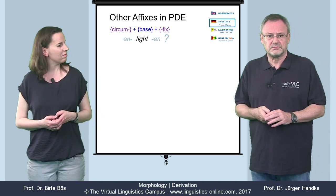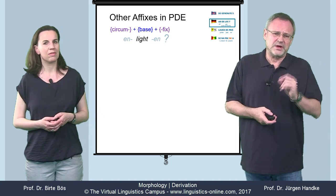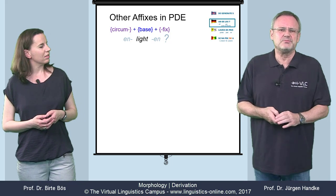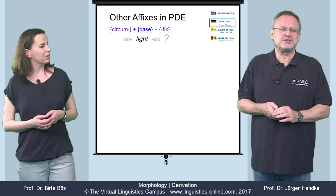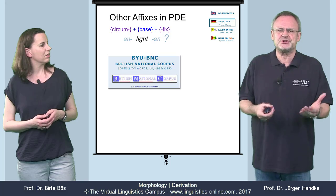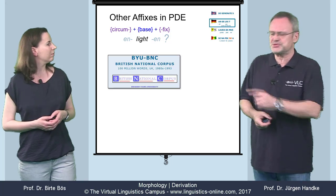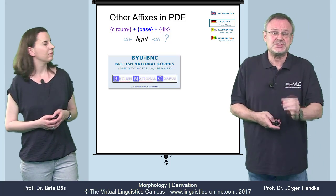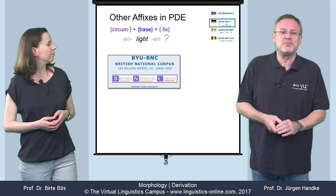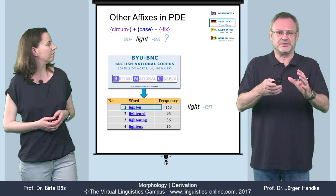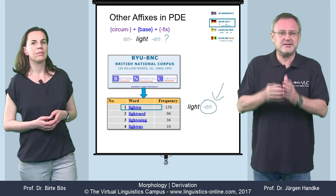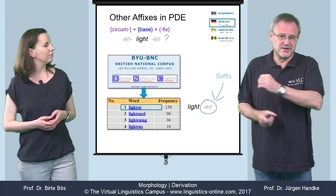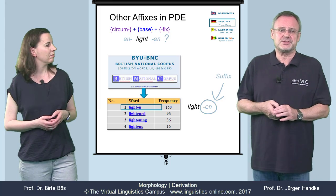But what about other affix types in present-day English? For example, circumfixes — take enlighten. Isn't that a circumfix? Well, not really. If we check the most common databases, such as the British National Corpus, we can see that there is a separate form, lighten. Thus, the final -en is a suffix, and not part of a circumfix.